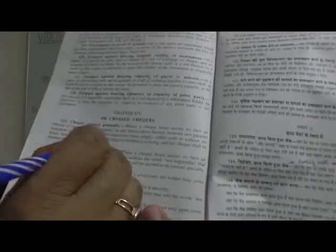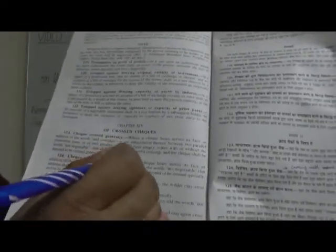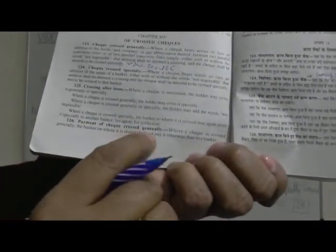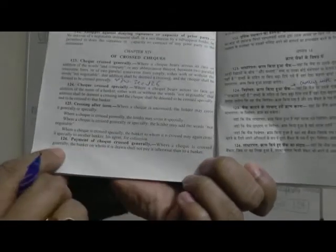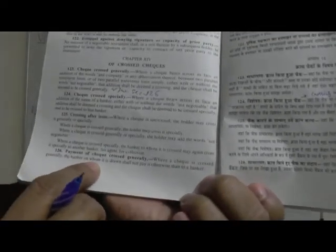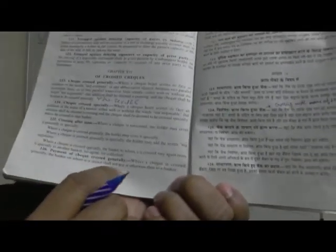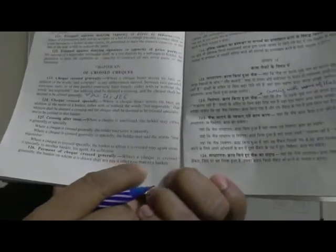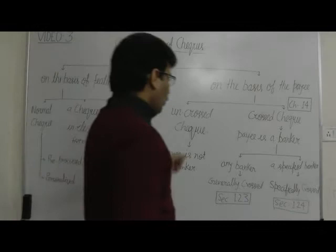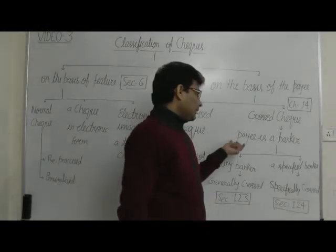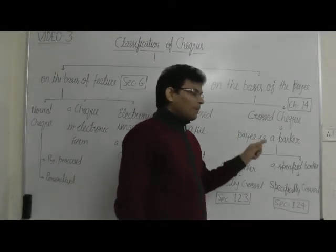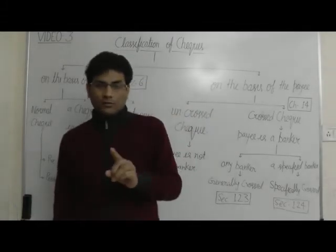Section 123 should be read with Section 126 — Payment of a check crossed generally. Where a check is crossed generally, the banker on whom it is drawn shall not pay it otherwise than to a banker. It means after a check is crossed, the amount is to be paid only to a banker and not to the individual.